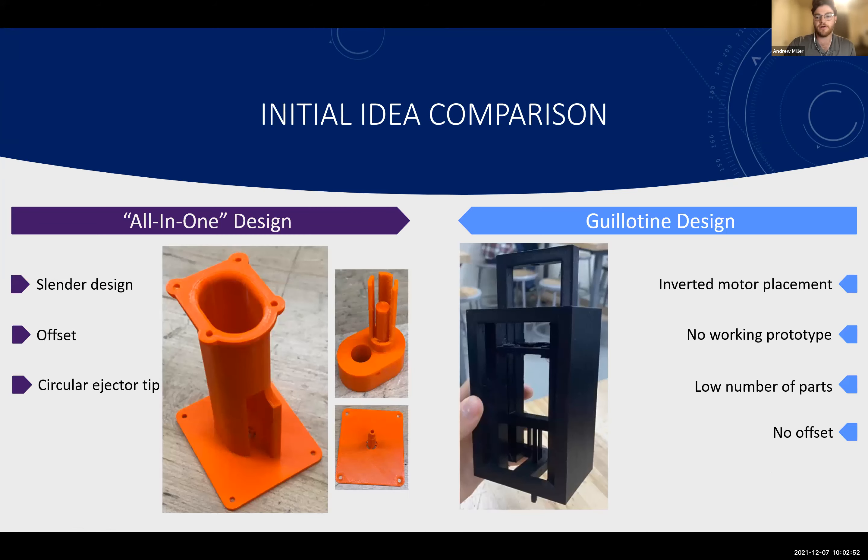Our group decided to take a different idea at the beginning of the semester. We broke up into two mini teams, we actually had two groups of three who came up with two designs, we put those designs head to head and selected the winner. The one on the left, which is the one I was a part of, was an all-in-one design. We tried to do a slender design, reducing the part costs. One of the issues we came to discover was the offset of the motor, which had the plunger and ejector in the center.